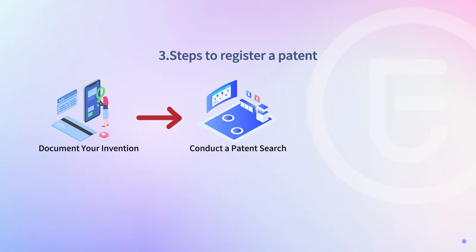Make sure you perform a comprehensive search using patent databases to ensure there is no similar invention existing. You can run your patent research through the USPTO Online Patent Base or Google Patent. Non-obviousness is also a key requirement—the invention must not be obvious to a person with ordinary skill in the relevant field at the time the invention was made. The invention must also be useful and have a practical ability to achieve some functional purpose.